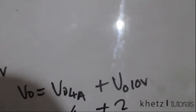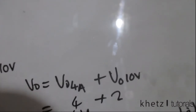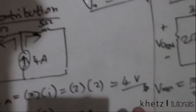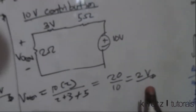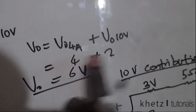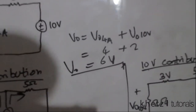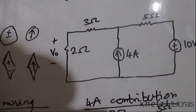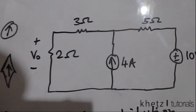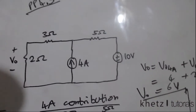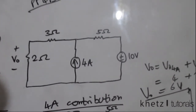Now we simply add the contributions of both independent sources to find the final value of Vo. The 4-ampere source contributed 4 volts and the 10-volt source contributed 2 volts, so 4 + 2 = 6 volts, which is the final answer for Vo using superposition. You can verify this using a different method; it should give the same answer.